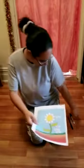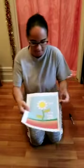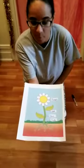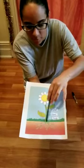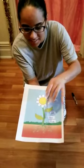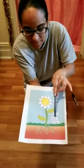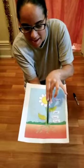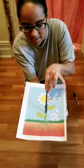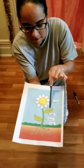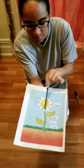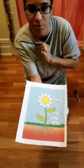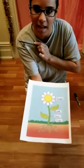So let's review a little bit what we did yesterday. We talked about the parts of a plant. We talked about the roots. We talked about the stem right here. And we talked about the leaf. And this part right here, which is the beautiful flower.